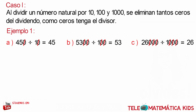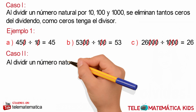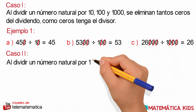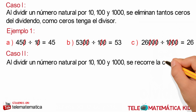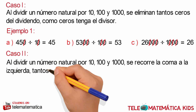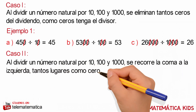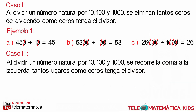Caso número 2. Al dividir un número natural por 10, 100 y 1000, se recorre la coma a la izquierda tantos lugares como ceros tenga el divisor. Veamos un ejemplo.